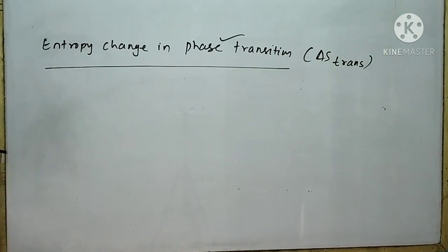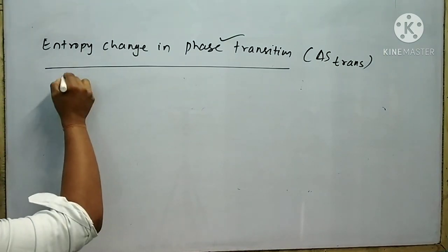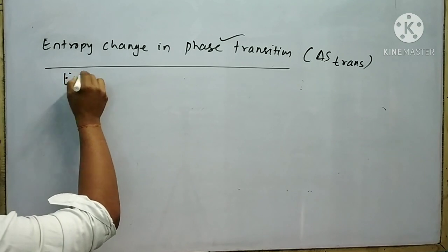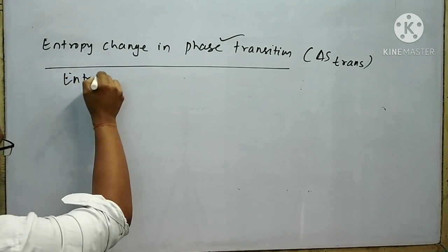The entropy of fusion is denoted by ΔS_fus. It is the entropy change when one mole of solid substance changes into liquid form at its melting point. Mathematically, ΔS_fus = ΔH_fus / T, where ΔH_fus is the enthalpy of fusion at fusion temperature T.